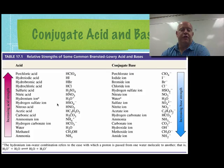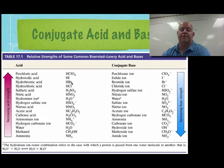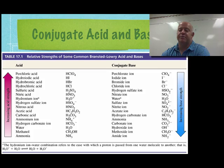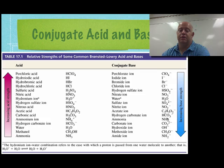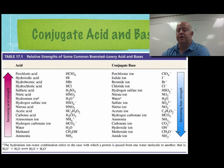Looking at a comparison table: hydrobromic acid is one of our strongest acids. Its conjugate base — bromide ion — has very weak base strength. Nitric acid is another strong acid, and its conjugate base, nitrate ion, is very weak. Going down the table, ammonium ions are a pretty weak acid, but the ammonia molecule is a relatively strong base. Similarly, methanol is a very weak acid, but the methoxy ion is a relatively strong base.